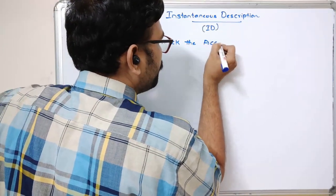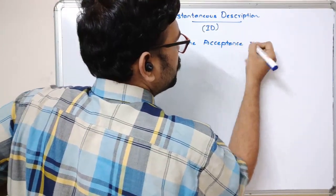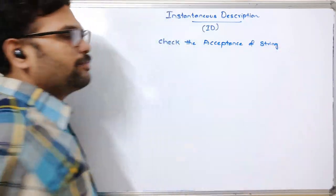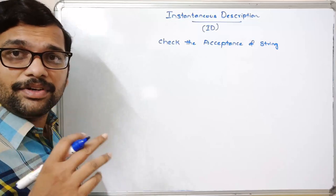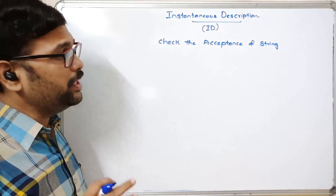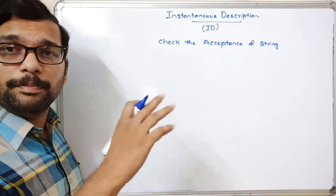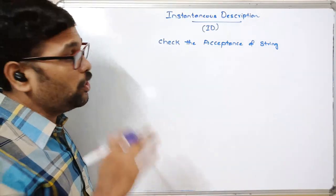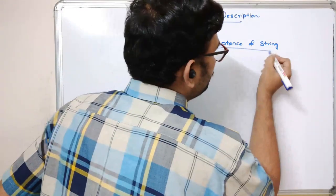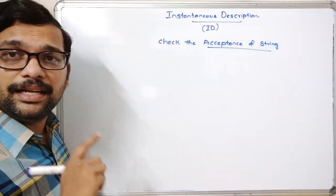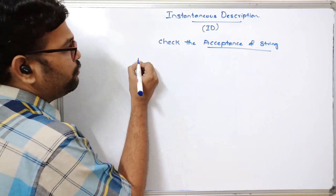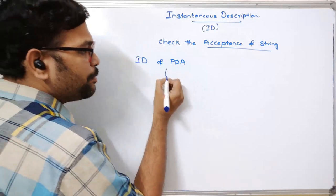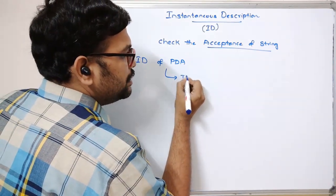This Instantaneous Description is mainly used to check the acceptance of a string. After designing the delta function and transition functions, we need to check whether a string of the particular language is accepted by the given transition function or not. To check the acceptance of the string, we use this Instantaneous Description — the ID of PDA — and it is represented as a triple.